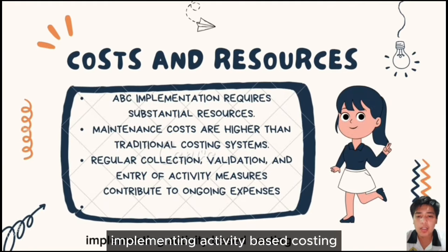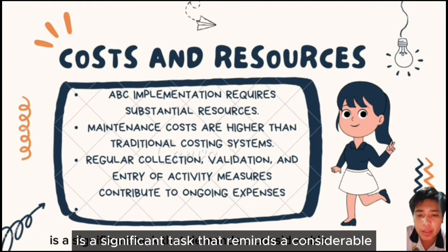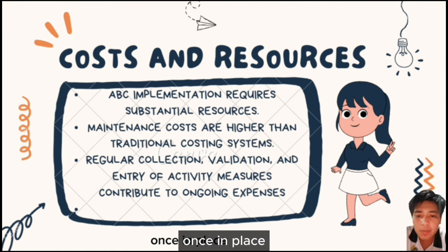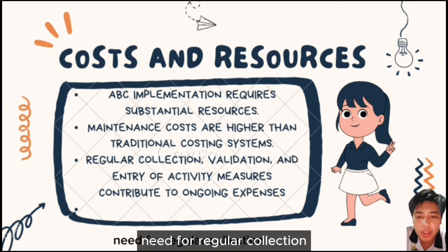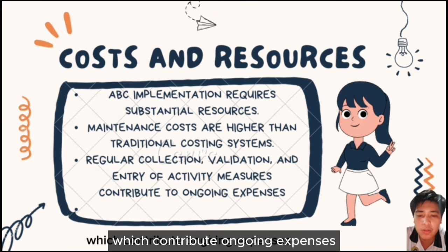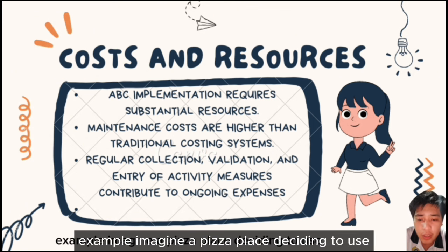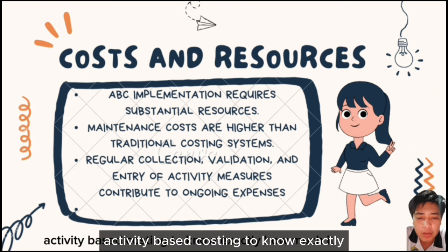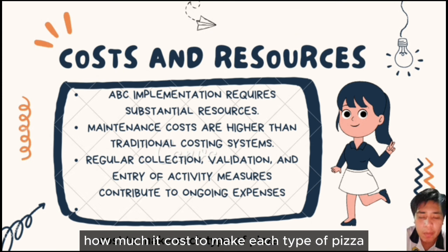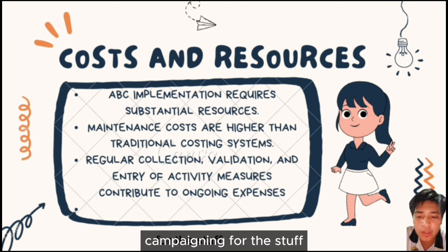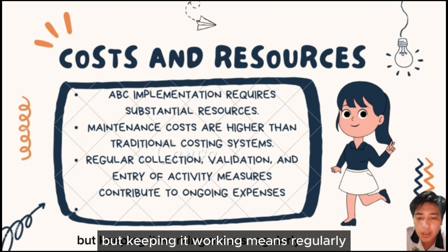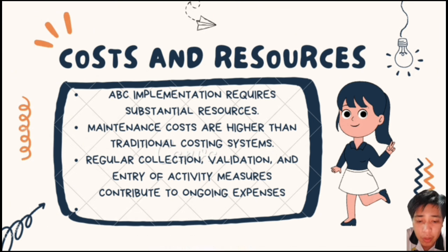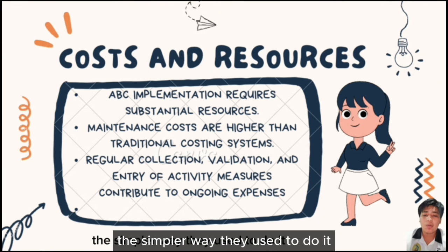Cost and Resources: Implementing ABC is a significant task that demands considerable resources. Once in place, maintenance costs tend to be higher compared to traditional costing systems, primarily due to the need for regular collection, validation, and entry of activity measures. For example, a pizza place using ABC must regularly check and confirm details about making pizzas, which can end up costing more than the simpler traditional method.